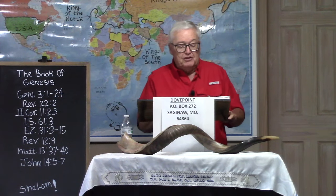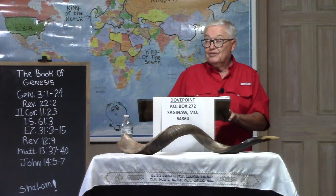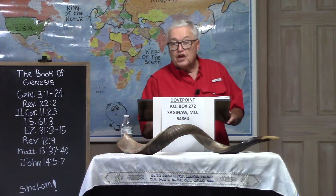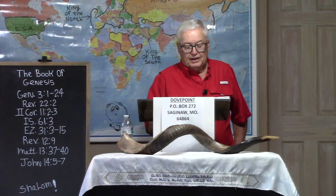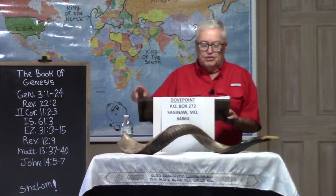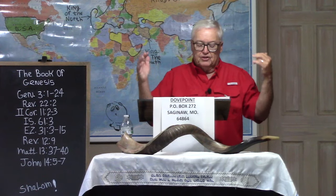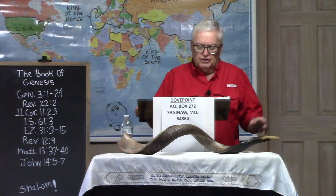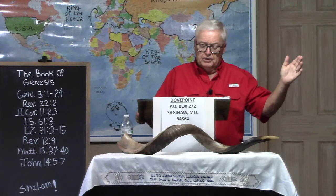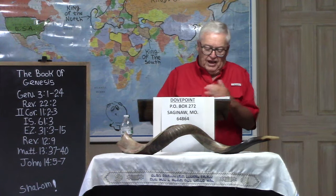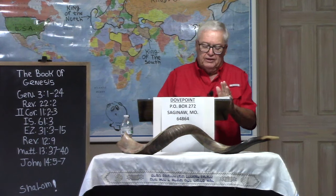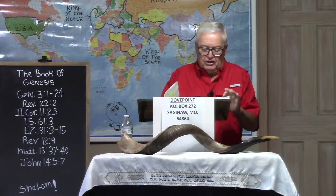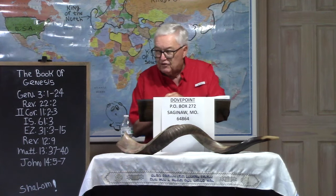Verse 39: 'The enemy that sowed them is the devil.' He's talking about the same person — the tree of the knowledge of good and evil, the serpent in the garden, that old dragon, the devil and Satan that sowed that seed. Then Jesus said: 'The harvest is the end of the world and the reapers are the angels.' So we find out here that Christ did teach about the children of the serpent, and why Adam and Eve used fig leaves for an apron instead of a mask. Does that make sense?